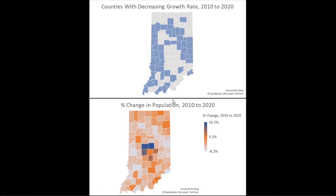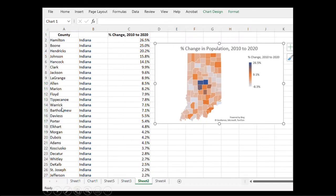Let's look at actual data in Excel to see attribute tables in action. Here I have two maps using the same dataset. One map shows where population decreased in the last decade. The other shows the general statewide pattern in Indiana — you can clearly see counties around Marion County, particularly to the north and west, had population growth from 2010 to 2020. Both are created from an attribute table with a geographic component and percent change data.